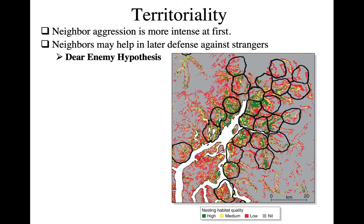Earlier we discussed how there's a lot of singing and aggression over territorial boundaries early in the breeding season when establishing territories — or the same on the wintering ground. But then the singing rate may go down a little, and what birds are doing is listening to territorial neighbors. As long as you're singing from your spot and neighbors are singing from their spots — the spots already agreed upon through previous aggression — there's no need to fight over that again. At that point you see what is called the dear enemy hypothesis.